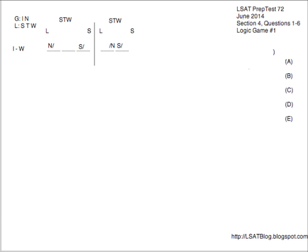I've laid out a bunch of rules that I'll explain. We start with the two segments, so I've drawn a dividing line separating the two different segments. We have three reports in the first, so I drew three spaces, and two reports in the second segment, so I laid out two spaces there. We have our general reports, I and N, and our local ones, S, T, and W. Within each segment, reports are in order from long to short, so I put L-S within each segment as a general reminder. Each segment contains at least one local report, so I put S, T, W above each of the segments as a reminder.